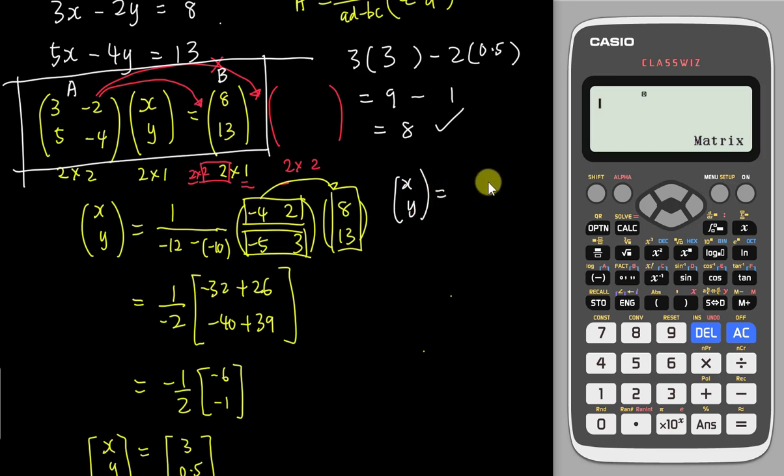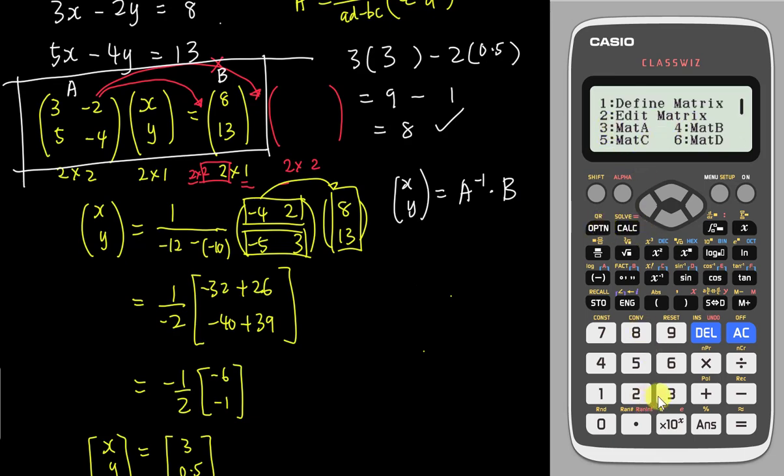So my XY, it basically will equal to my A inverse multiply the matrix B. So A inverse, I go back to the option, choose the matrix A, which is number 3. And then in order to do inverse, I need to use this button here. You see, I type this one, it's exactly A inverse. But in this calculator, they have a matrix A inverse. Then I want to multiply the matrix B, go to option number 4. Then I type equal. I should be able to straight away get my final answer, 3 and 0.5. This calculator actually show you 1/2 here. It's the same meaning.